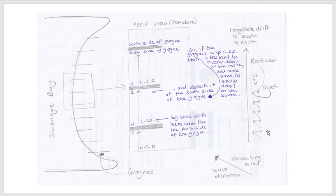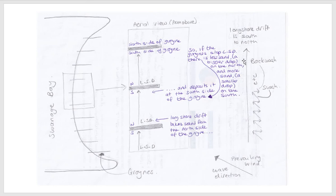So we have this zigzag pattern of the waves going up the beach, and these waves as they zigzag up the beach they carry the sediment with them. If there are no groins, then all the sediment gets moved to the other end of the beach and then it's lost. So in Swanage we have got longshore drift going from south to north, and we can see that in this diagram here.